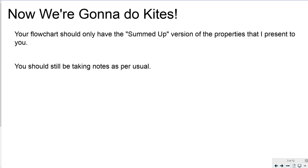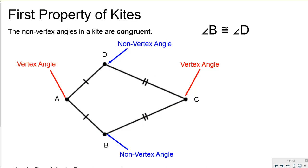So the flowchart you guys have from class should only have the summed up version of the properties that are presented to you. You still should be taking notes as per usual so let's start off with the first property of kites.